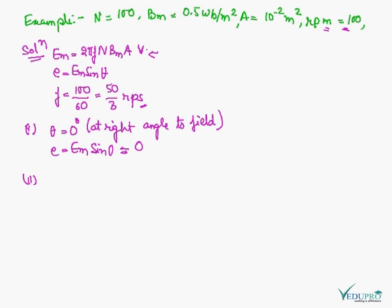In this case, theta is equal to 90 degrees, so e is equal to Em sine 90. Sine 90 is equal to 1, so e is maximum voltage Em. Now substituting the given values we get...